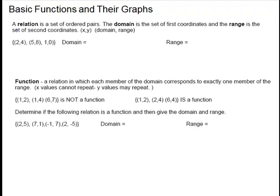Basic functions and their graphs. First we have some definitions. A relation is a set of ordered pairs, so points. The domain is the set of all the first coordinates, so the domain is the x's. The range is the set of the second coordinates, so the range is the y's. The order does matter in an ordered pair, and the parentheses is part of the notation.